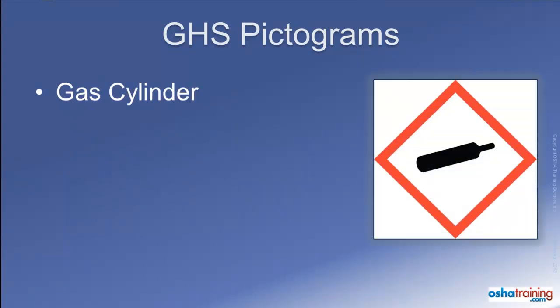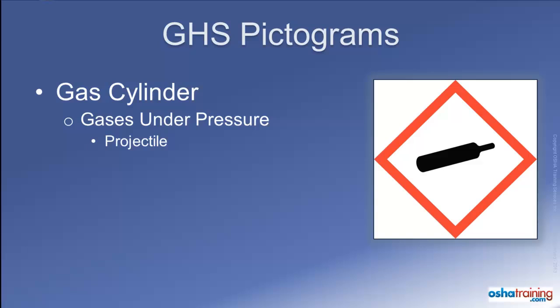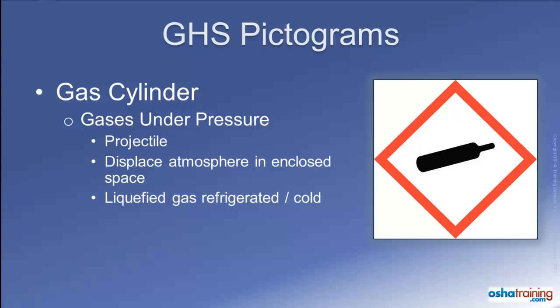The compressed gas cylinder pictogram will appear on labels of cylinders of compressed gas under pressure. Care must be taken when handling these cylinders because a broken regulator or valve can cause the cylinder to become a projectile. Also, when a compressed gas leaks into an enclosed space through a leaking hose or cracked valve, the gas can fill up the space and cause an oxygen-deficient atmosphere. Some gases are liquefied so they can be placed inside a cylinder, and some of these gases rapidly expand and cool when released, potentially causing frostbite injuries if the gas makes contact with your body.